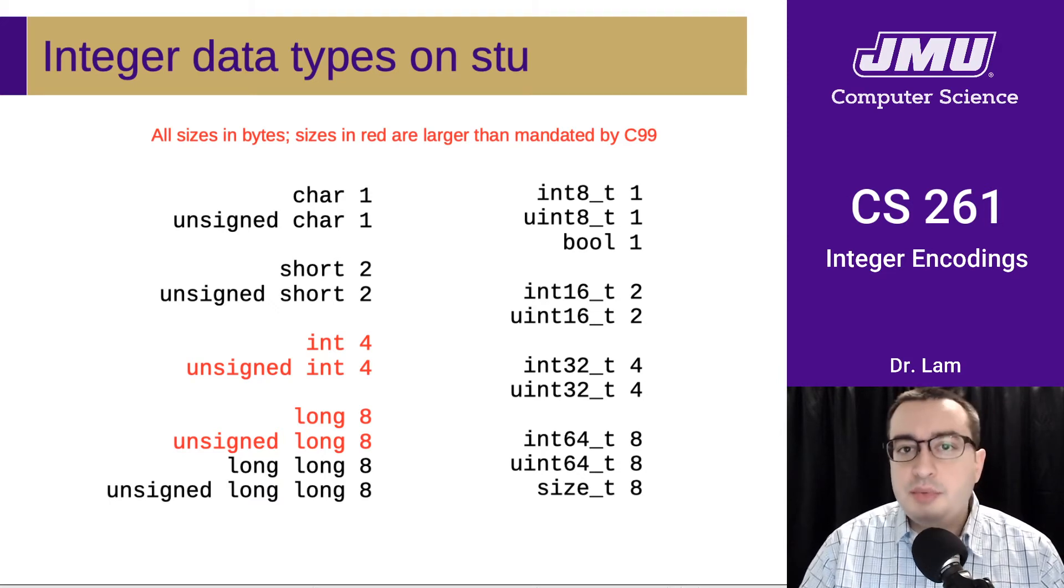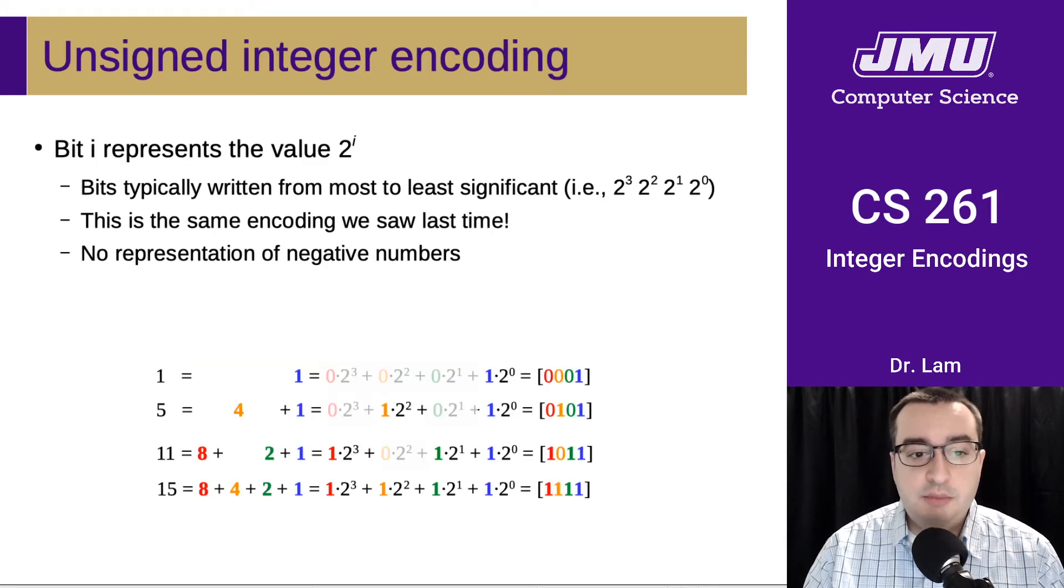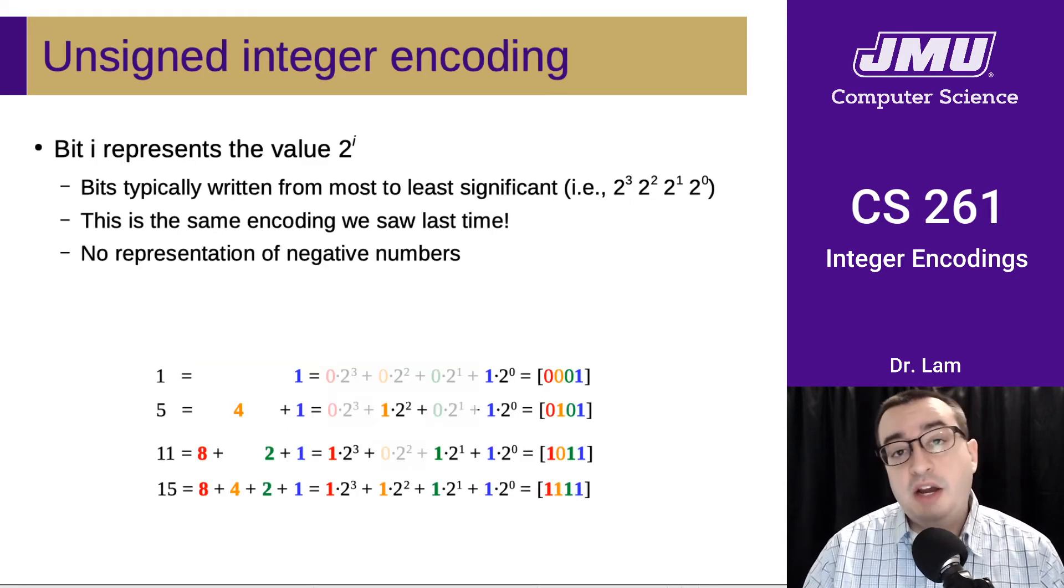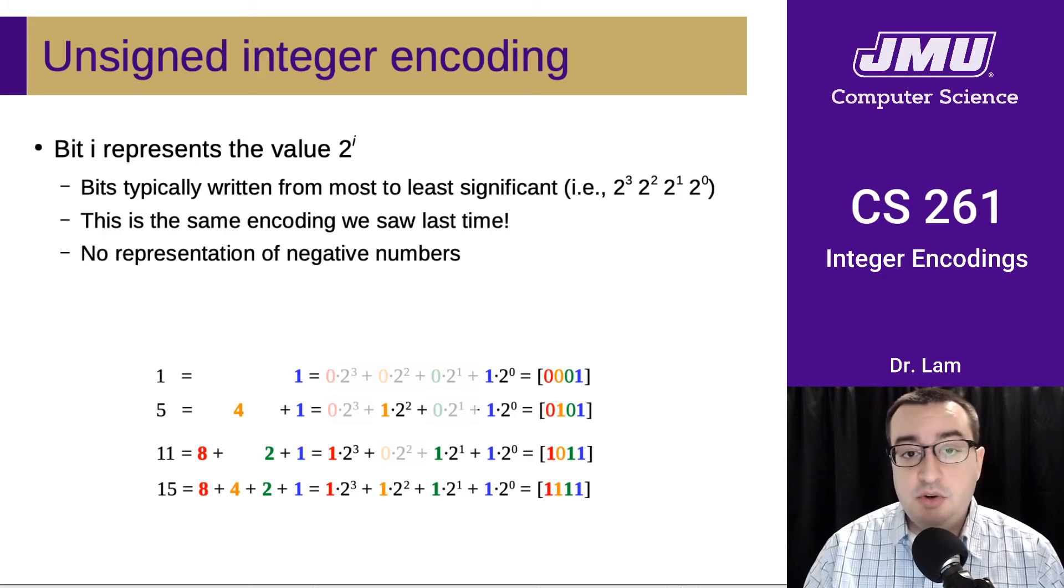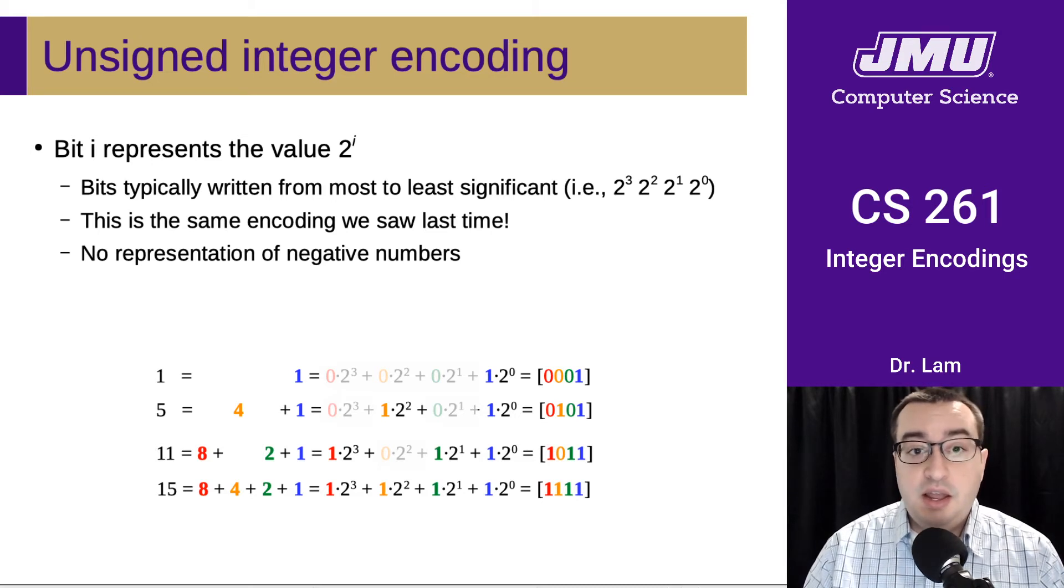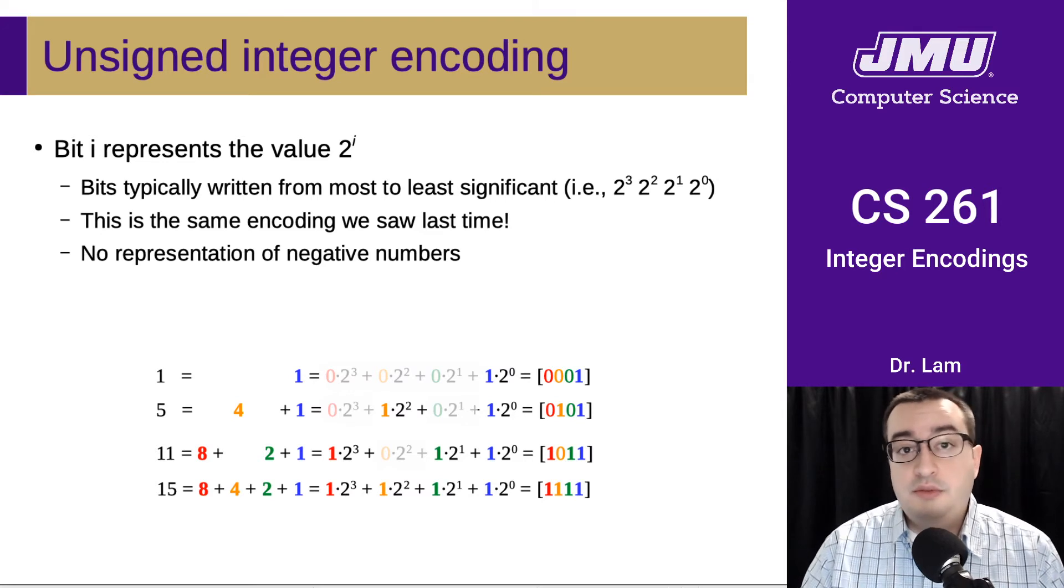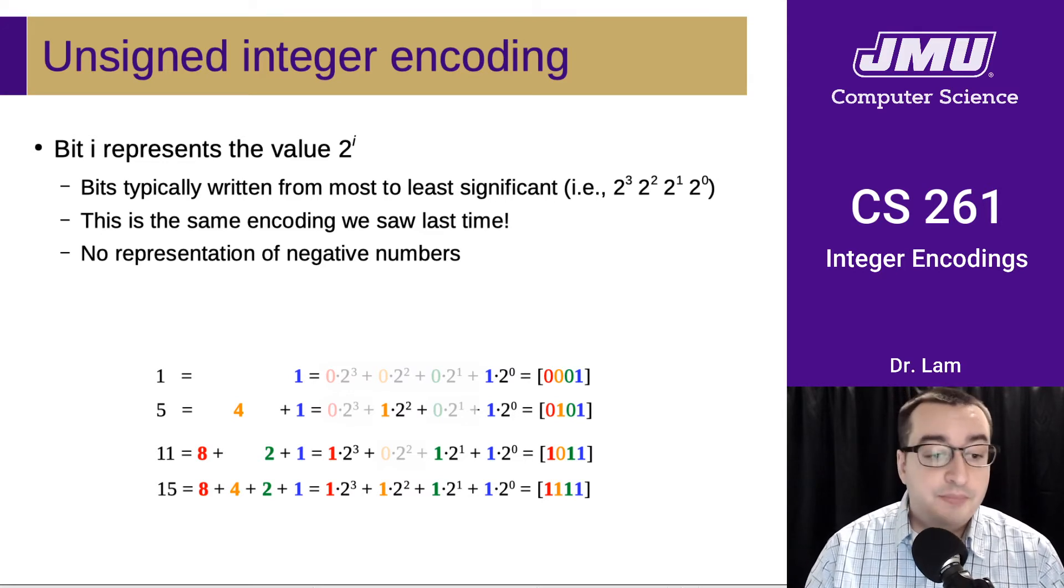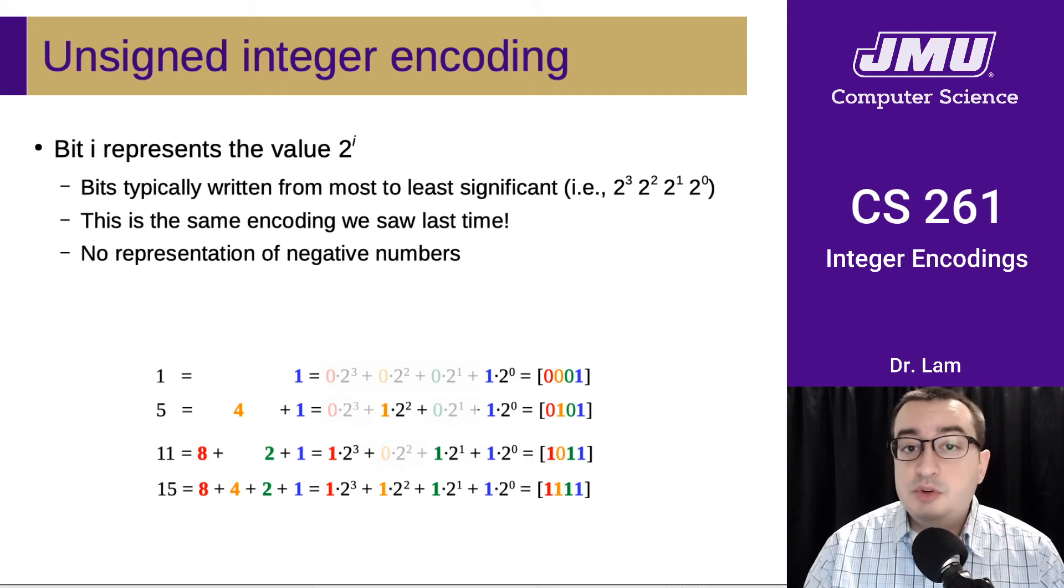So just something to be aware of as you work on that machine. Okay, so let's talk about unsigned integer encoding. In fact, we've already talked about unsigned integer encoding. This is what we saw last time. So basically you just write all the bits in order from most to least significant, and then store them using whatever ordering encoding, little endian or big endian, that you're using on the system. And of course this is unsigned, which means that you can't store negative numbers.